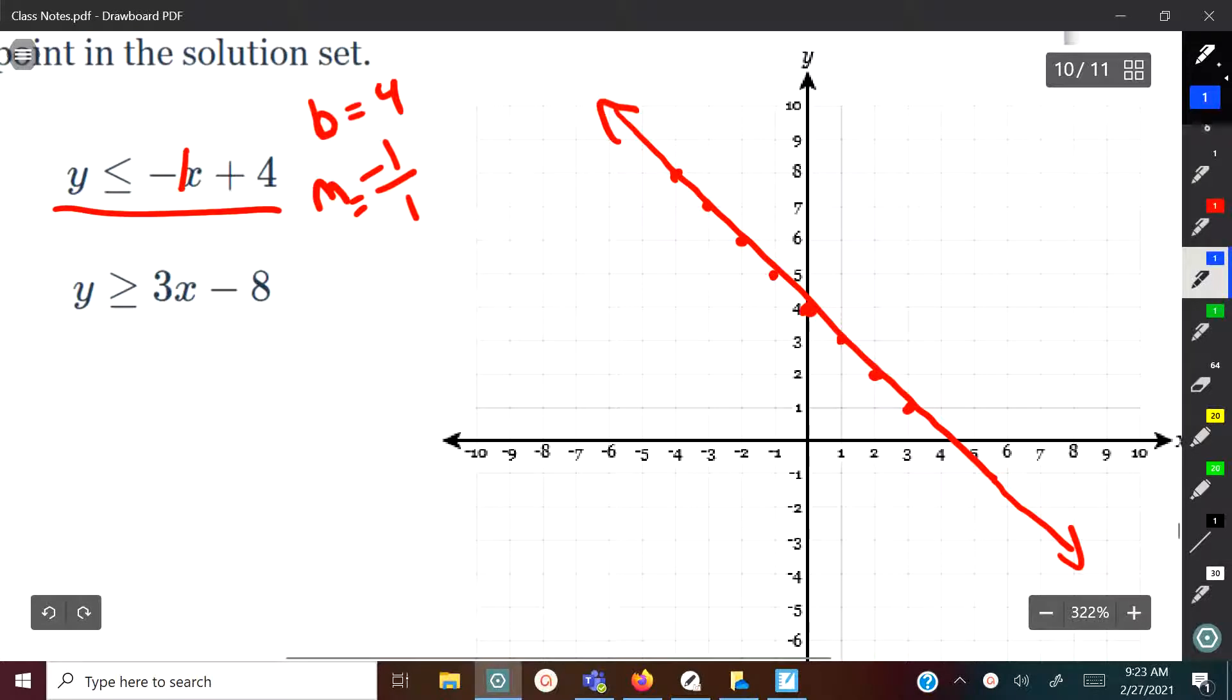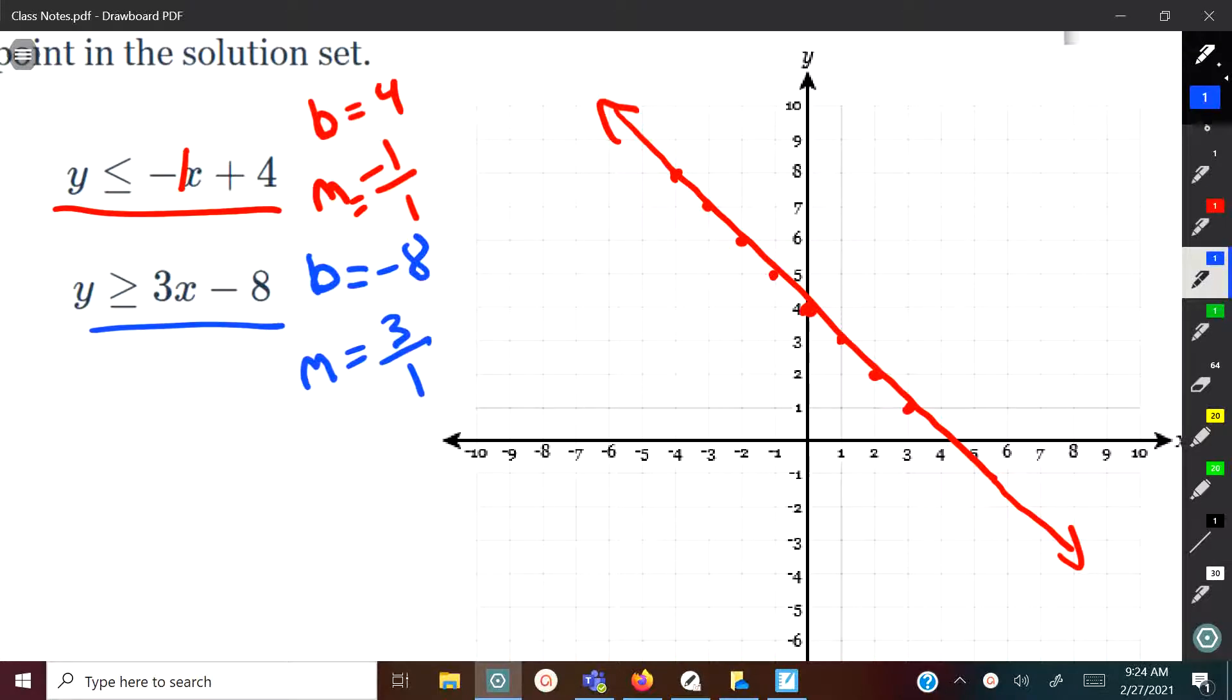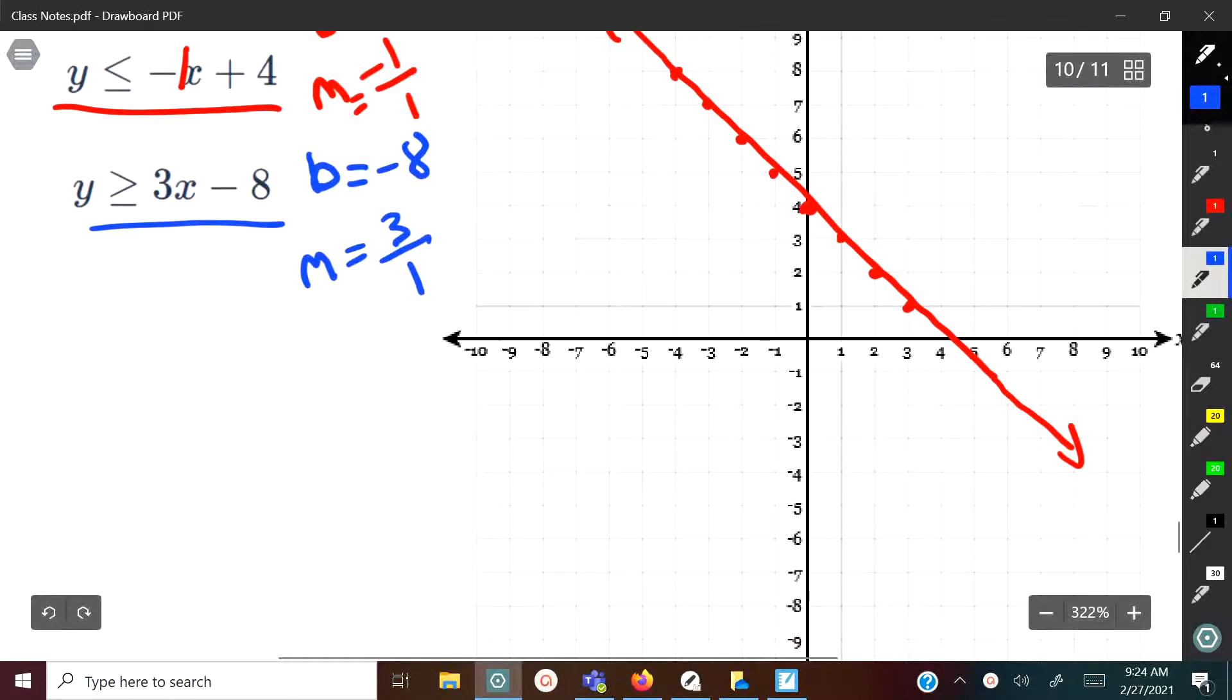Alright, so let's do that one first. And then I'm going to show you why in just a second. So we start here, the y-intercept is negative 8, and the slope here is positive 3 over 1. So I'm going to go down to negative 8, and I'm going to go up 3 and over 1, up 3 and over 1.